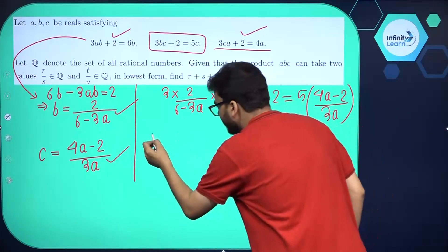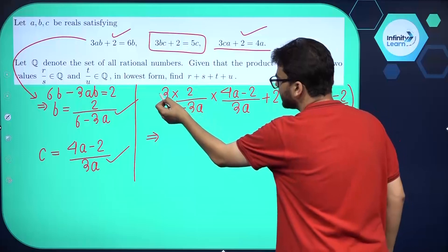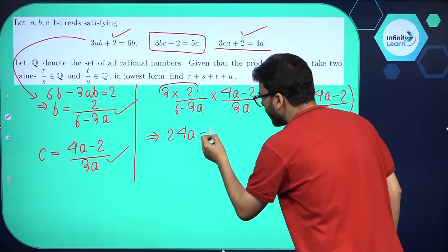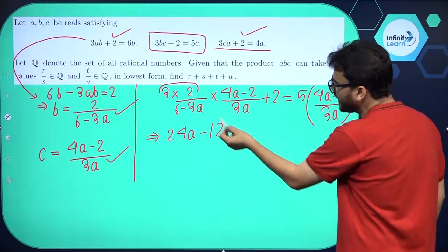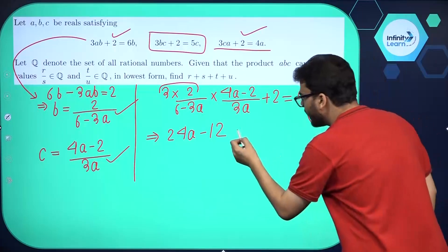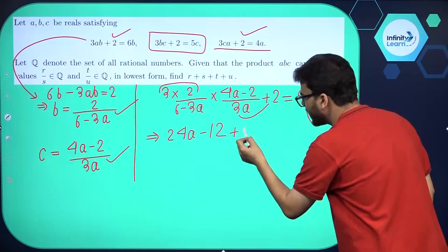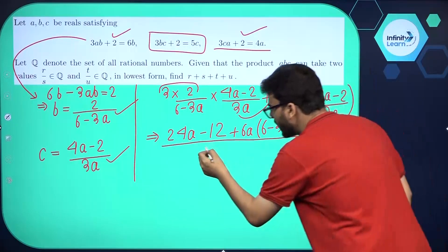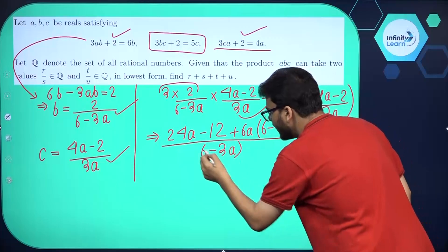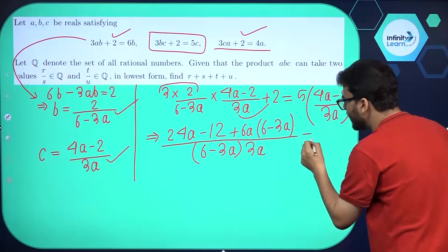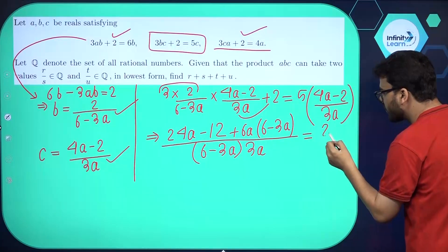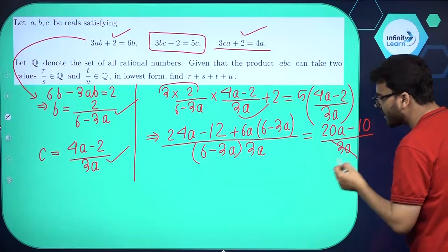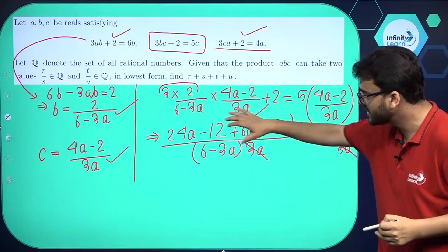Let's simplify further. The numerator on the left becomes 6, and opening the bracket gives 24A minus 12. Taking the LCM, we multiply to get 6A times (6 minus 3A) in the numerator, with (6 minus 3A) times 3A in the denominator. On the right side, opening the bracket gives 5 times 4A minus 5 times 2, so 20A minus 10, divided by 3A. We can cancel out 3A and then cross-multiply.